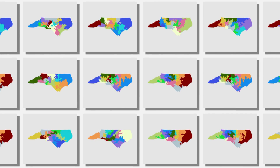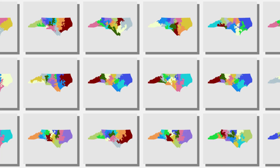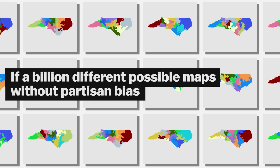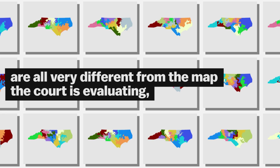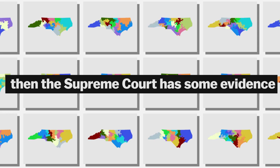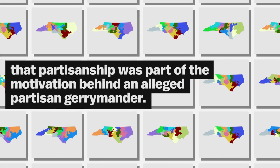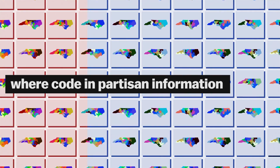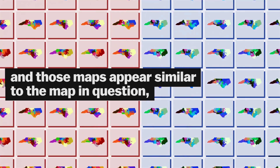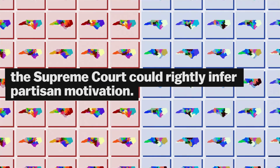If the current map doesn't look like any of the possibilities generated by the algorithm, that's a good indication a partisan gerrymander has occurred. If a billion different possible maps without partisan bias are all very different from the map the court is evaluating, the Supreme Court has evidence that partisanship was part of the motivation. If the computer then draws maps with partisan information coded in and those maps do appear similar to the map in question, the court could rightly infer partisan motivation.